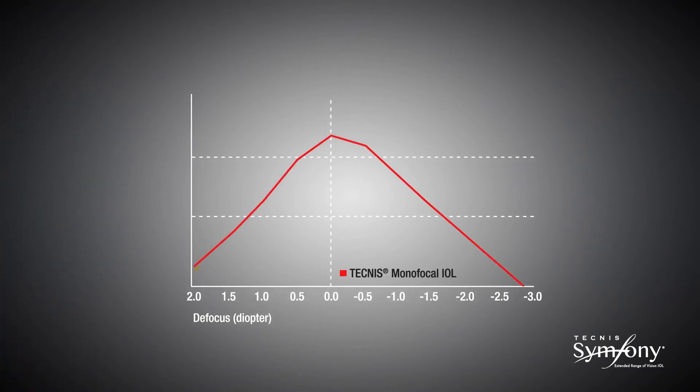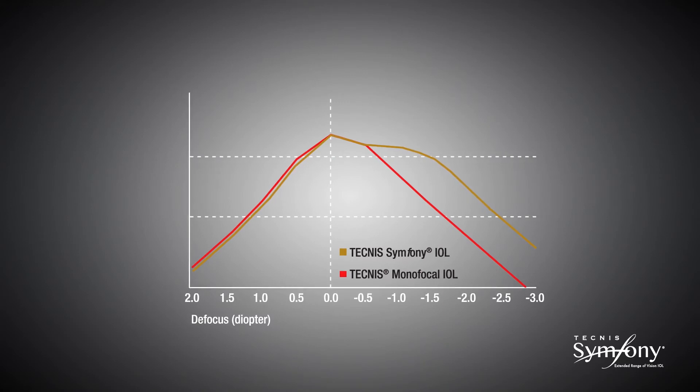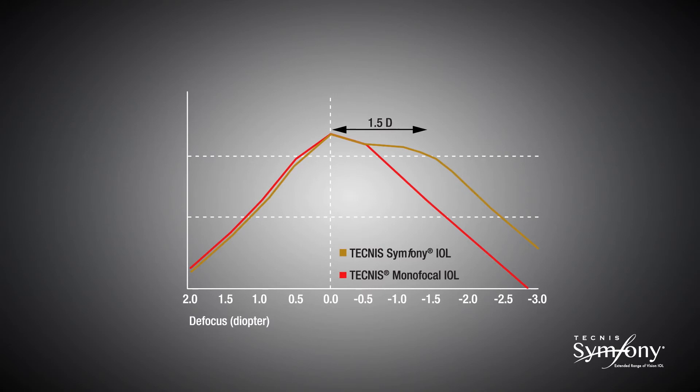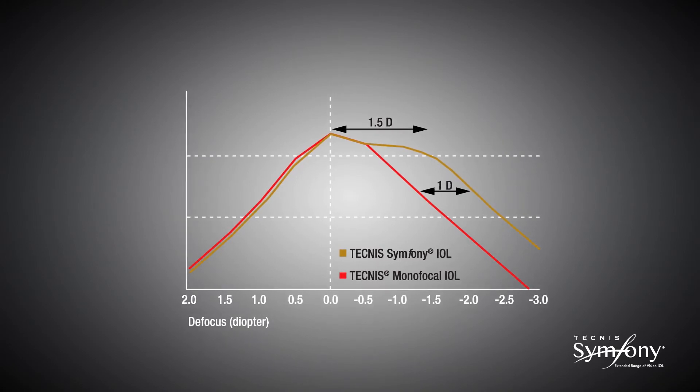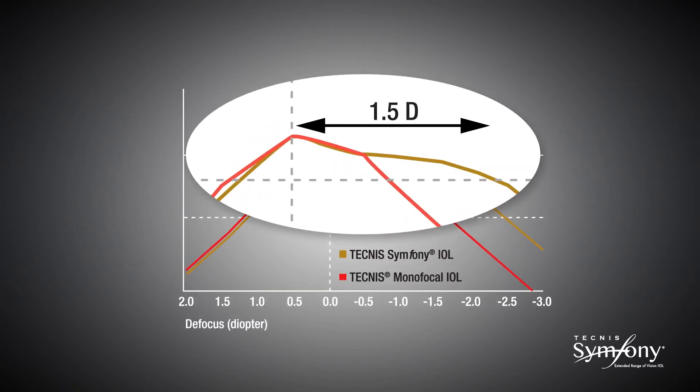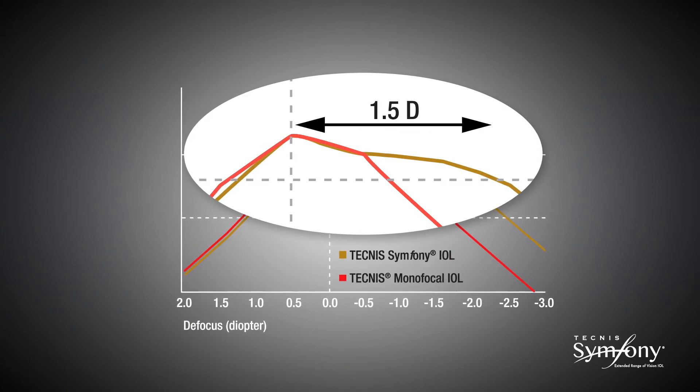Because of its elongated focus, the Tecnis Symphony IOL delivers high-quality vision through 1.5 diopters of defocus and an increase of 1 diopter range of vision throughout the defocus curve compared to a monofocal IOL. The plateau of the defocus curve demonstrates the extended range of vision of the Tecnis Symphony lens.